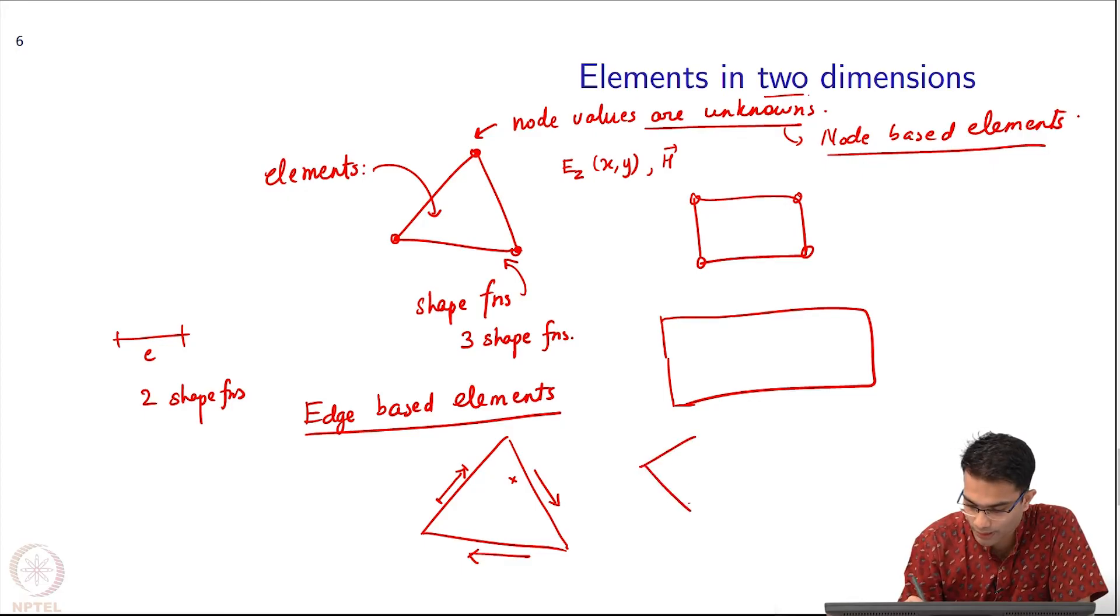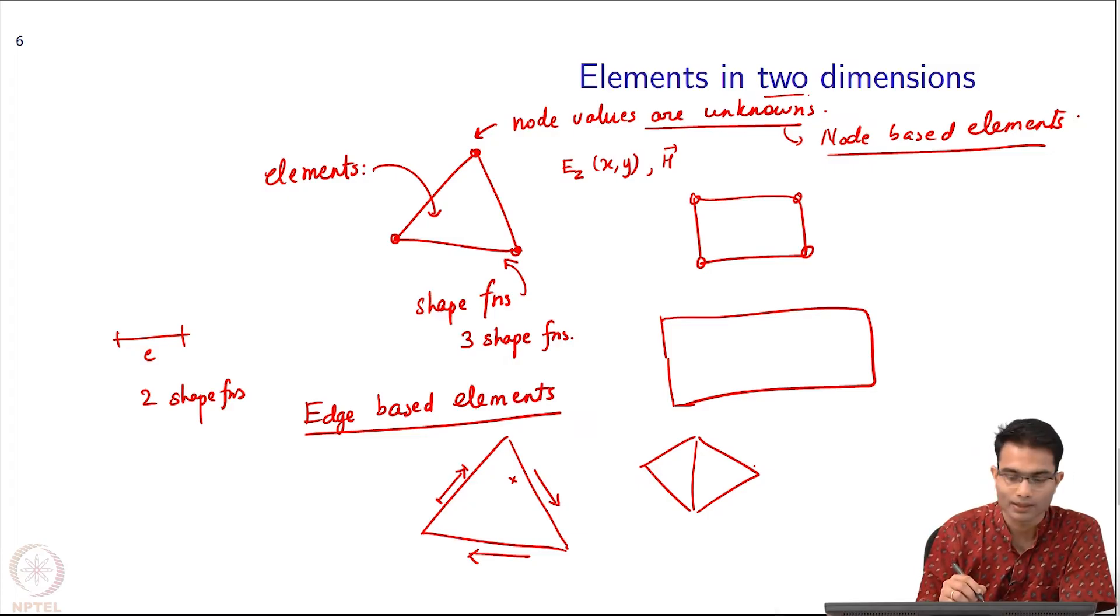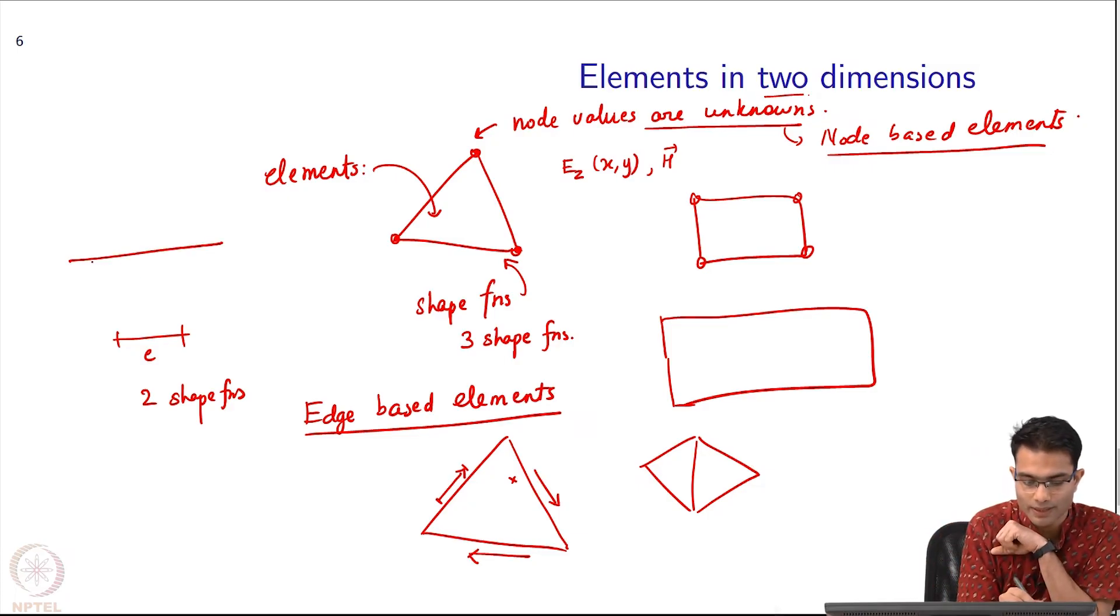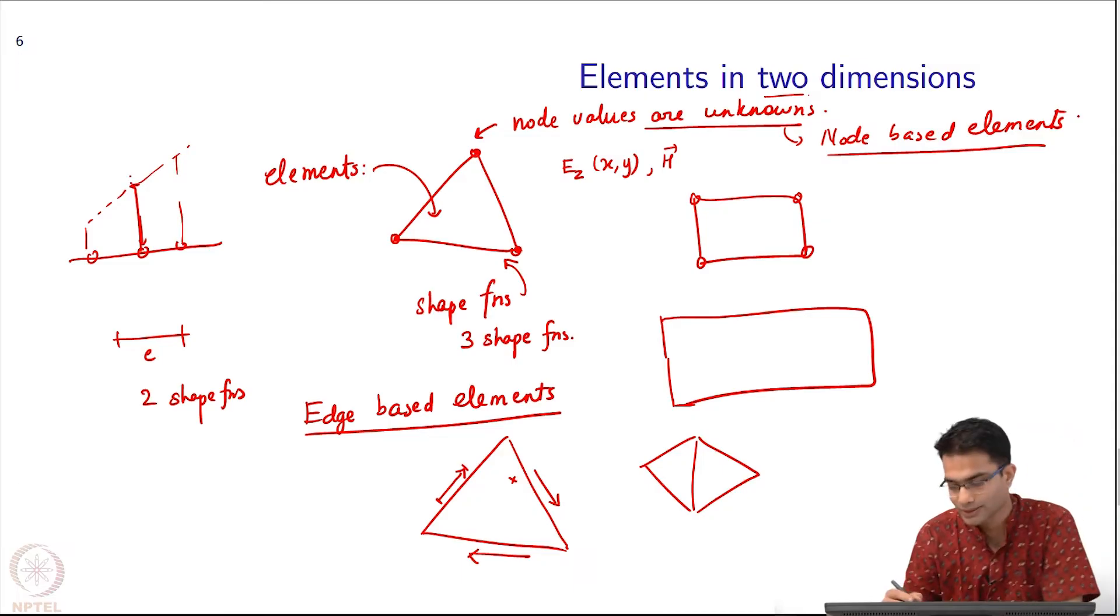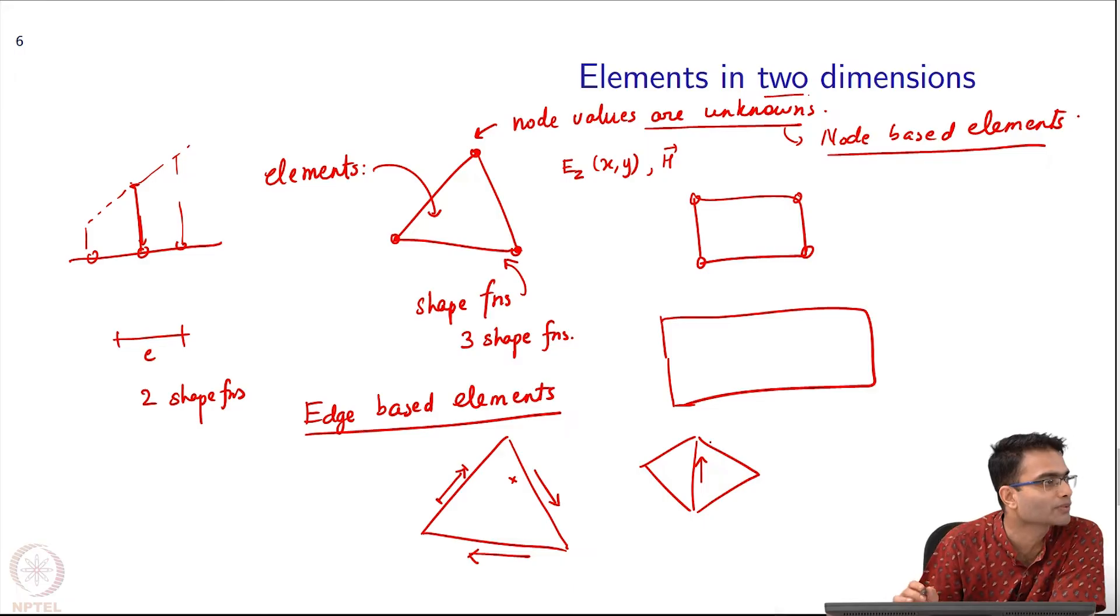Very good question. He is asking what happens supposing I have two elements like this. It is the same as in the case of 1D - I had two elements, the value of this node did not matter because the shape function can go down to here and go up to whatever value over here because this node value was constant.